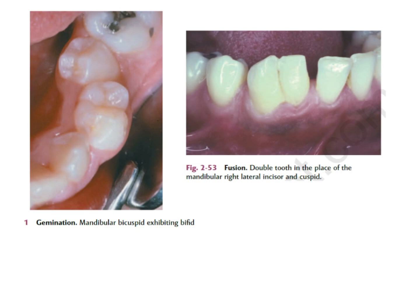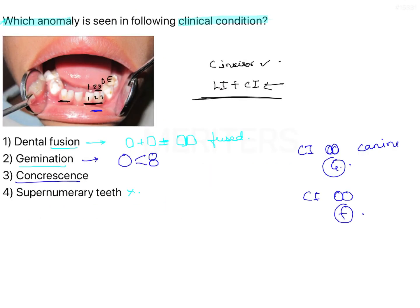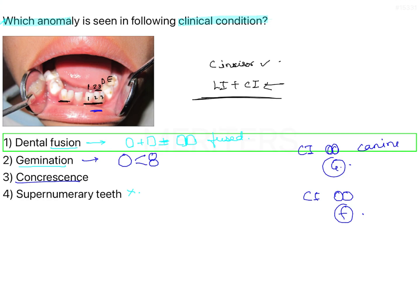Here is an image — I hope this makes things easier to understand. The first image is of germination: this premolar has split into one and two, and the second premolar is present as normal. The second image shows a double tooth in place of the mandibular right lateral incisor and cuspid — the same kind of situation where lateral and cuspid are fused together. Technically one tooth is missing because the canine has fused with the lateral incisor. So the correct answer for this image is dental fusion, option one.